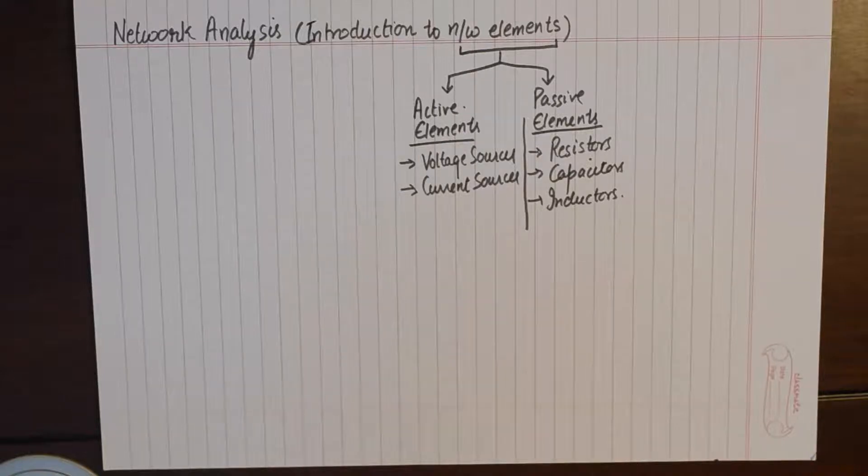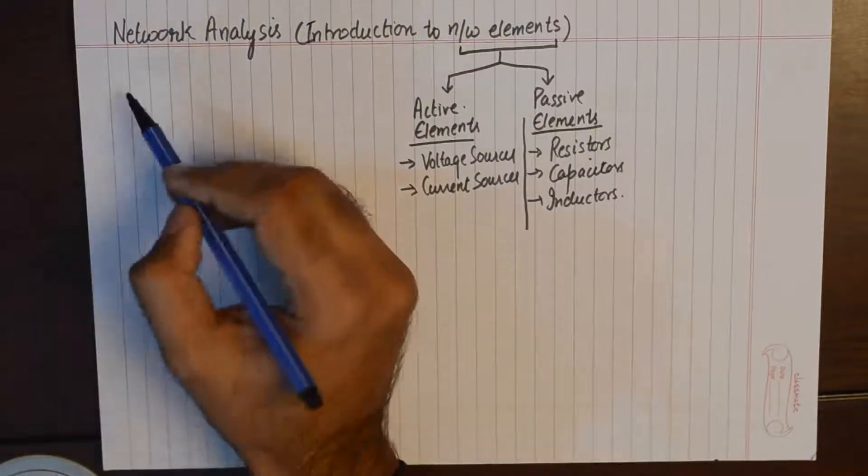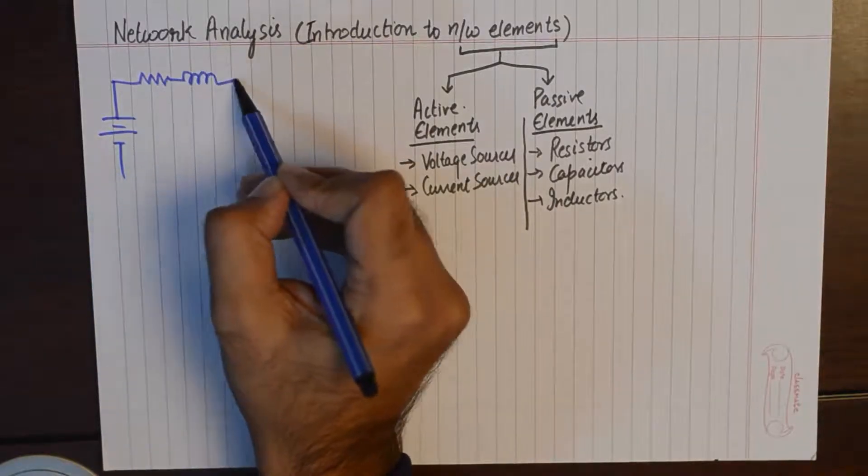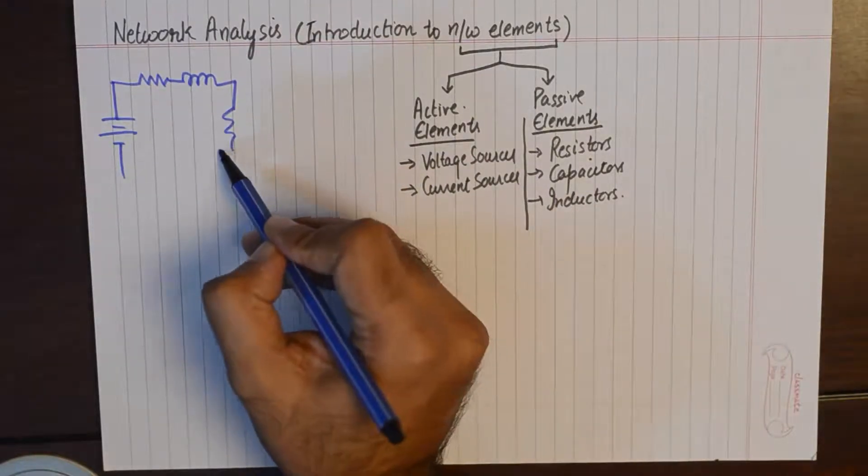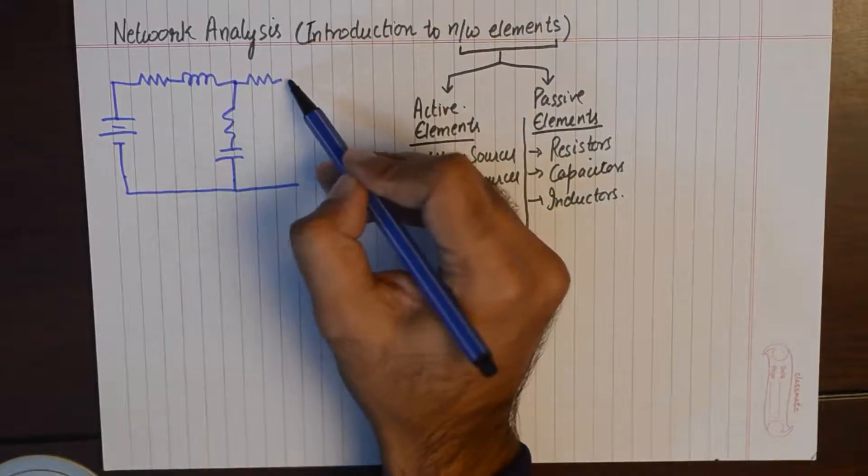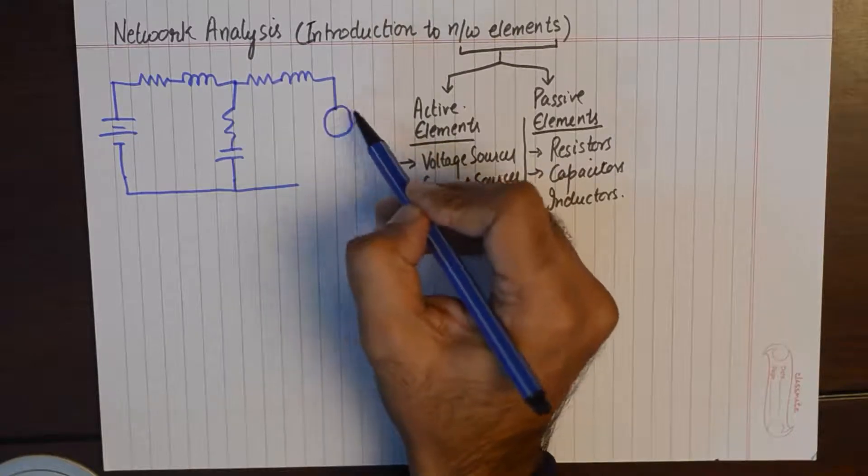Now what is the difference between these two? In any network you'll find these elements. Active elements perform the function of supplying energy to the network, whereas passive elements perform the function of consuming that energy. A typical example of a network is something like this.